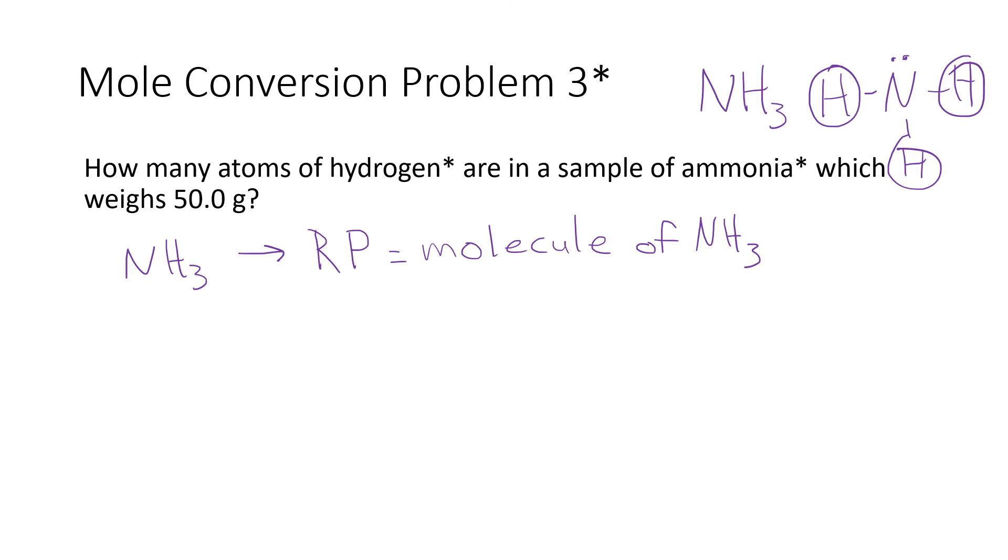Now you could go back to our previous problem number two and take the answer and start there and finish the calculation, but just to show you the worst case scenario of one of these mole conversion problems, I'm going to start this one from the very beginning. Our given quantity is 50 grams of ammonia, so I know the bottom of the next step has to have units of grams of ammonia.